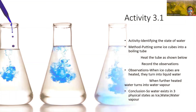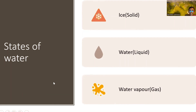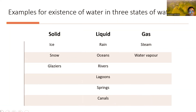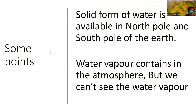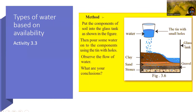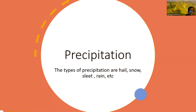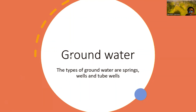We also covered how to write an activity, and the states of water — ice, water, and water vapor — with examples of water in three states: solid, liquid, and gas. Key points: solid form of water is available at the North and South Poles; water vapor is in the atmosphere but we cannot see it. We also discussed availability — precipitation, surface water, and ground water — and their types.